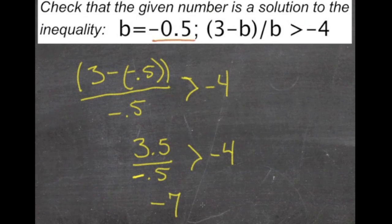So we have negative 7 is greater than negative 4. Now this might look like a true statement, but remember that a more negative number is smaller, it's farther from 0. So this statement is not true, and our answer up here is incorrect.